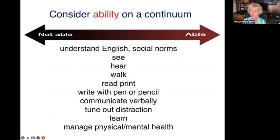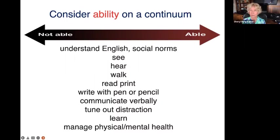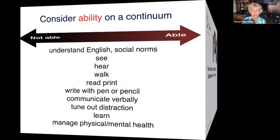Social norms are another example — some students on the autism spectrum have difficulty picking up some of the social norms and even understanding directions you're giving them. They might need a lot of clarification, but can respond very well to directions that are really well given and detailed. Similarly, the ability to see, hear, walk, write with a pen or pencil, communicate verbally, tune out distraction, learn, and manage physical and mental health — we could each rate ourselves on the scale, and I doubt two of us would have the same rating across the whole list.